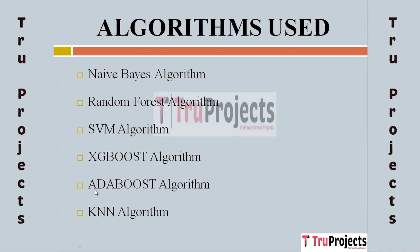The next algorithm is AdaBoost. AdaBoost adapts to incorrectly classified instances by sharpening its focus on more difficult-to-detect attacks, which helps produce a thorough and complex analysis of IoT network threats. The last algorithm is KNN. K-Nearest Neighbors instance-based learning aids in identifying similar attack patterns, assisting in accurate classification and providing a practical approach to IoT network security.